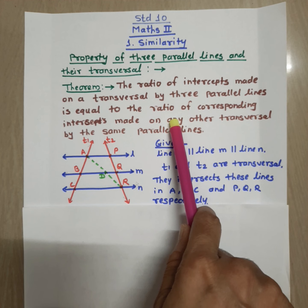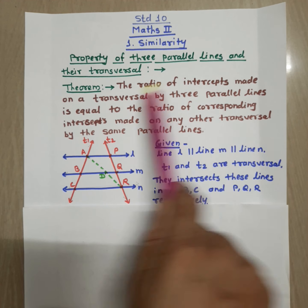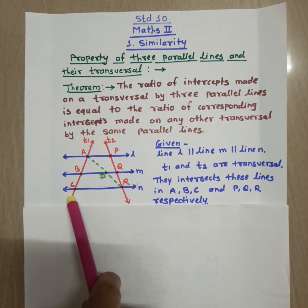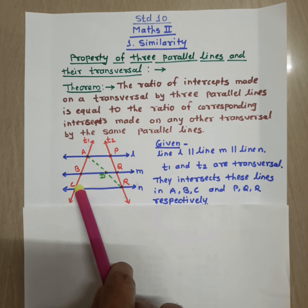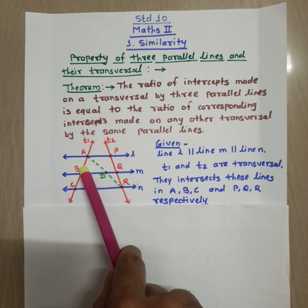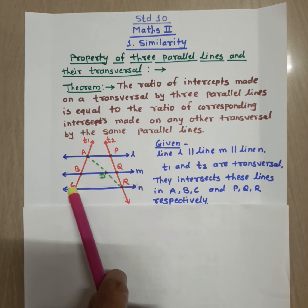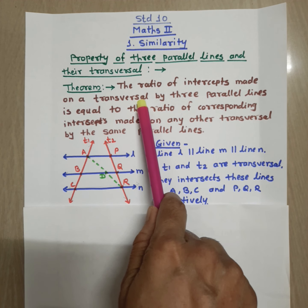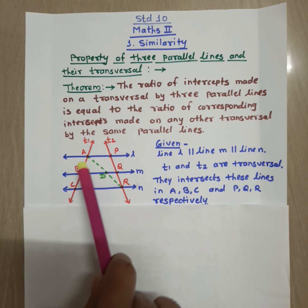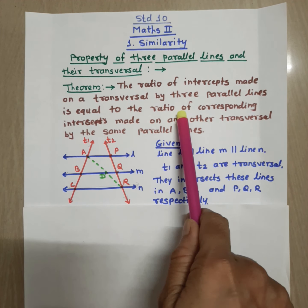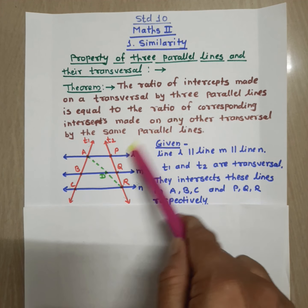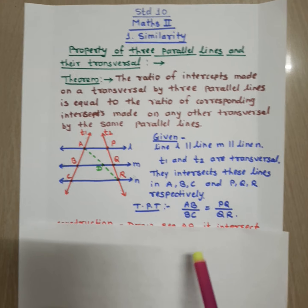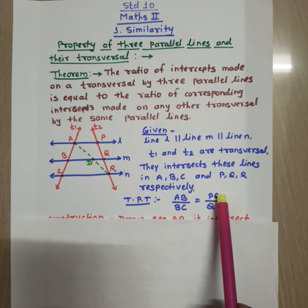Now observe what we want to prove. The intercepts on transversal T1 are segments AB and BC. The ratio of intercepts on T1 is AB upon BC. The ratio of corresponding intercepts on T2 is PQ upon QR. Therefore we want to prove that AB upon BC is equal to PQ upon QR.